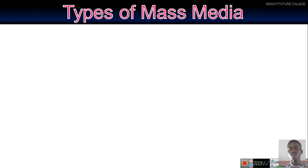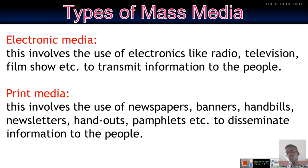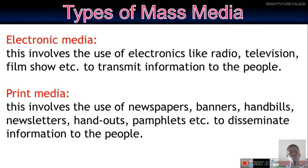Electronic media involves the use of electronics like radio, television, film shows, etc., to transmit information to people electronically. The sender and the receiver don't come into close contact — the information is not handed in hard copy; it's in soft copy. Print media involves the use of newspapers, banners, handbills, newsletters, handouts, and pamphlets to disseminate information, where the source of information is hard copy.